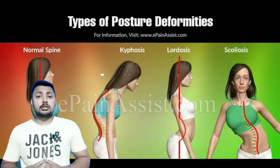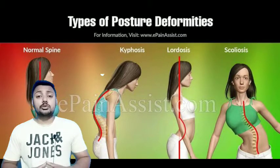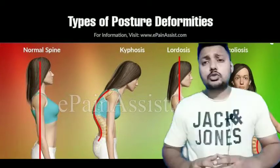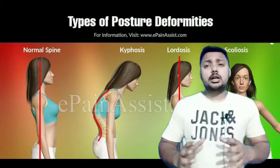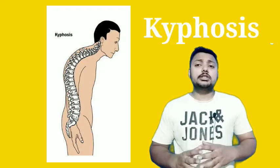Let's talk about Kyphosis first. Kyphosis is basically the forward bending of the upper back — when our upper back spine is excessively bent forward, we call it Kyphosis.